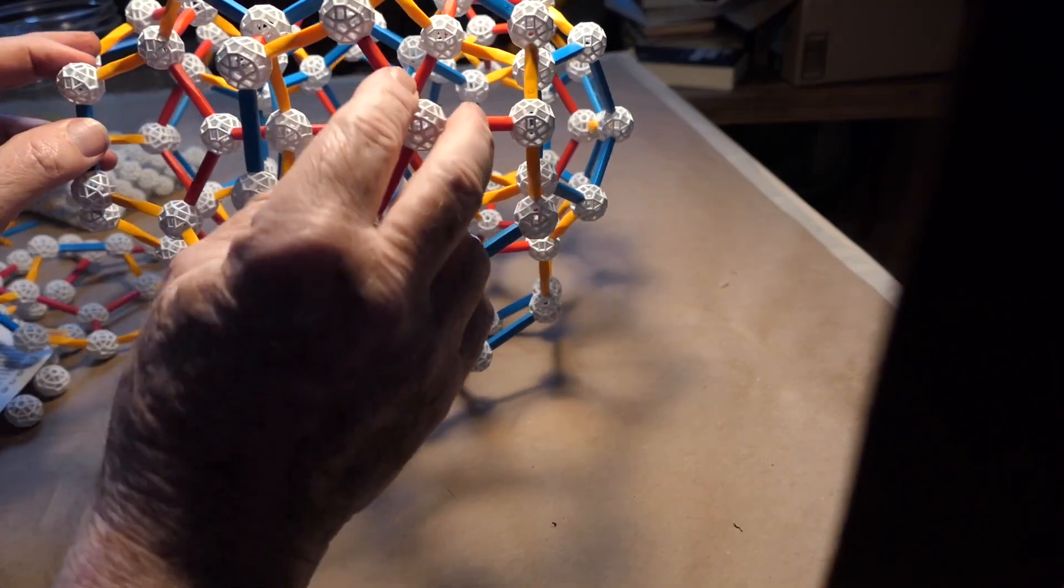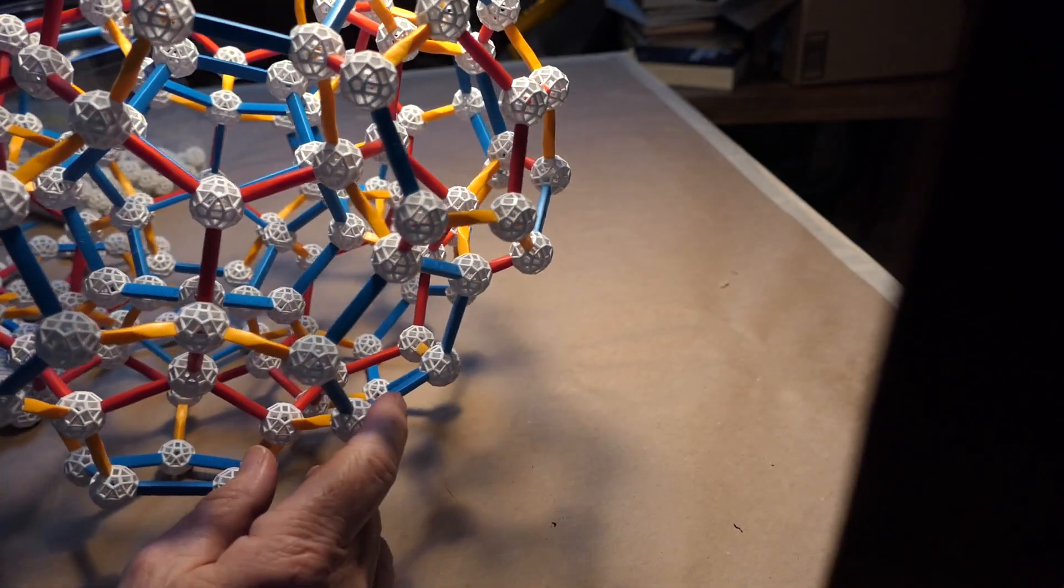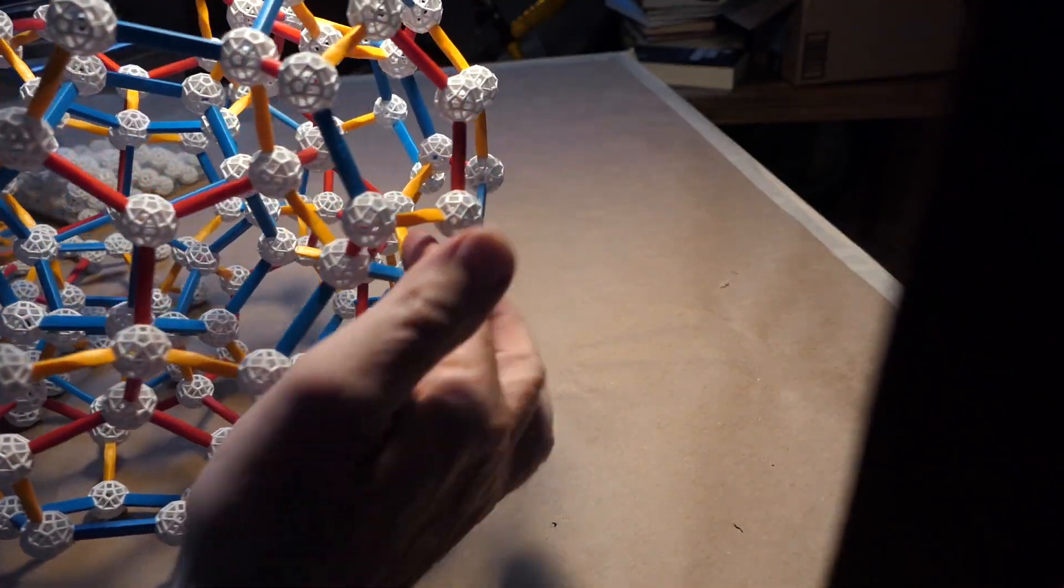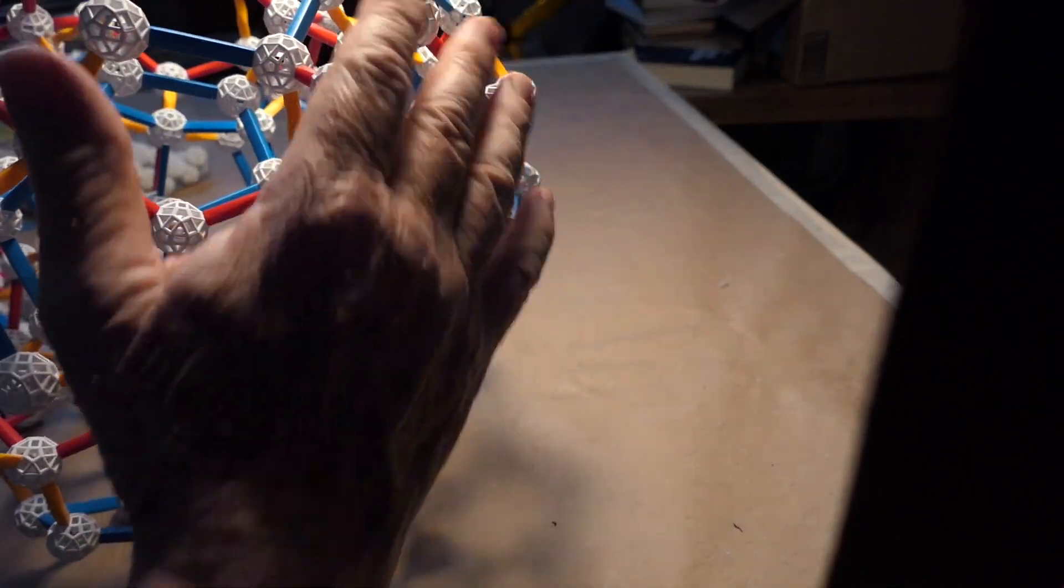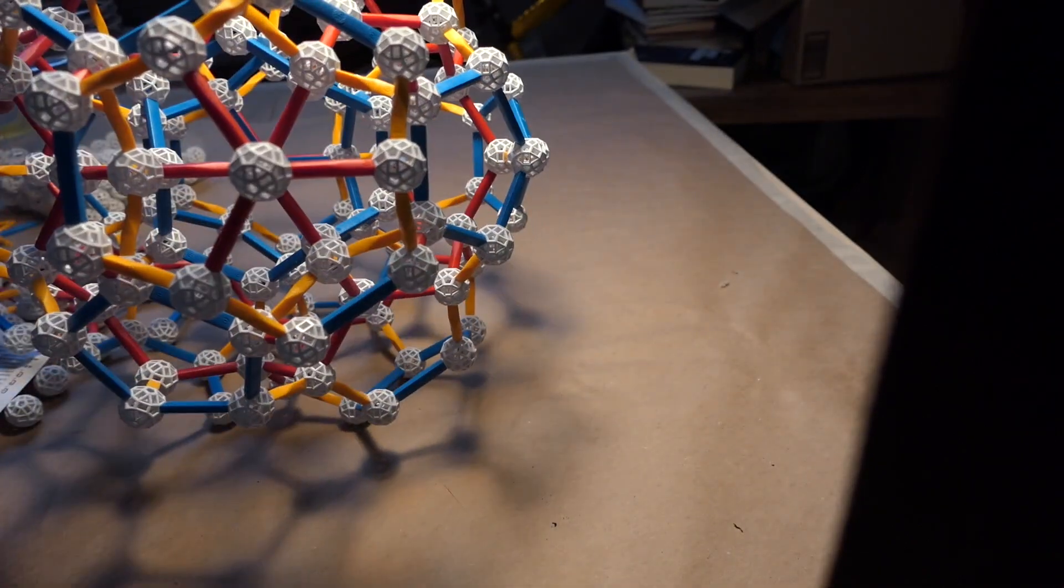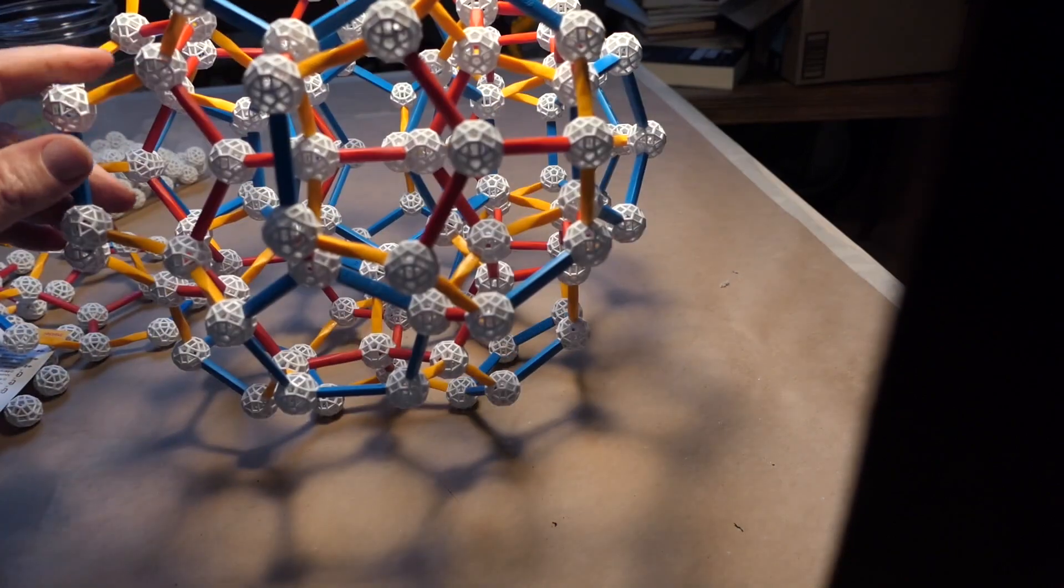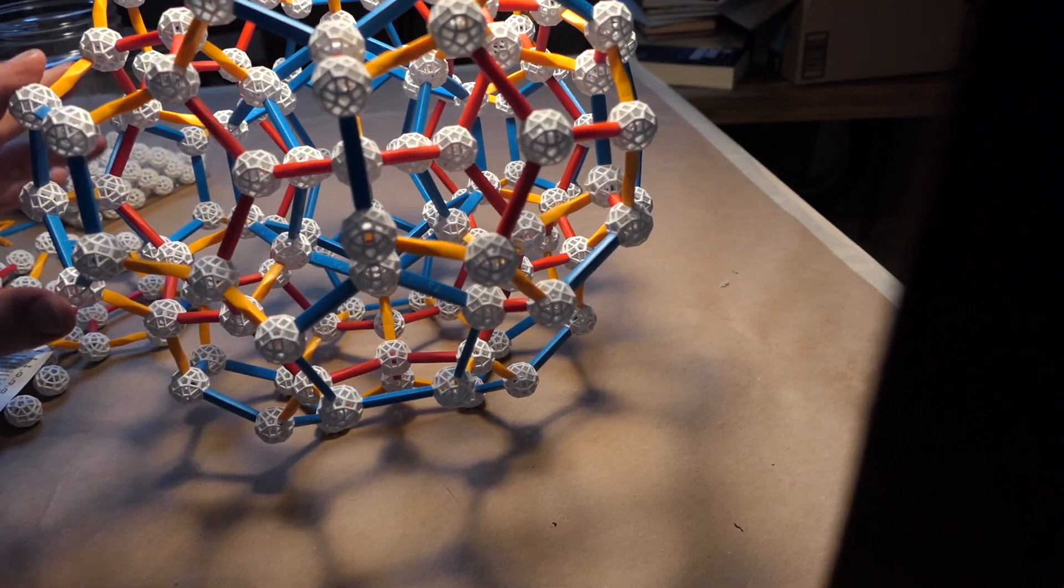So once that's on, then you can see now we have, again, that same structure, another flattened dodecahedron. Now I just have to do 11 more of them.